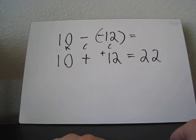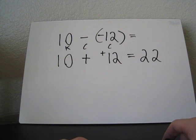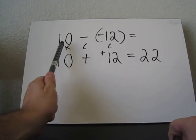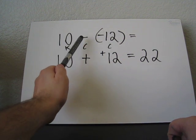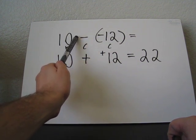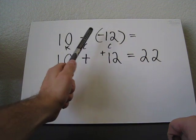Using the KCC method, or the keep change change method, we keep the first number, which is 10. So it stays the same. The C changes the minus to a plus. And the negative 12,